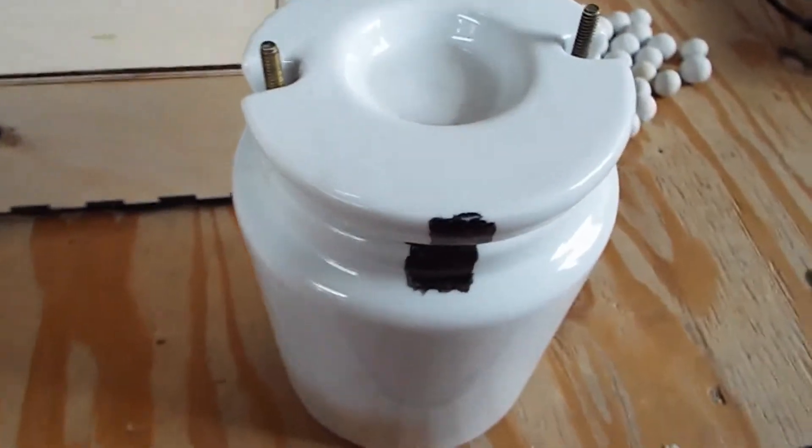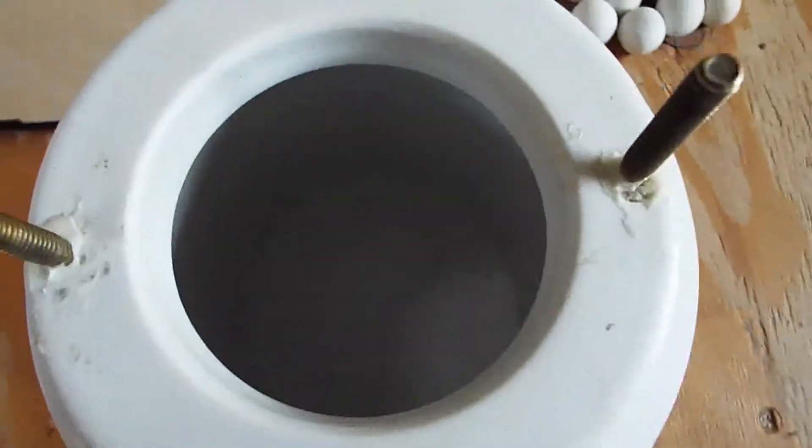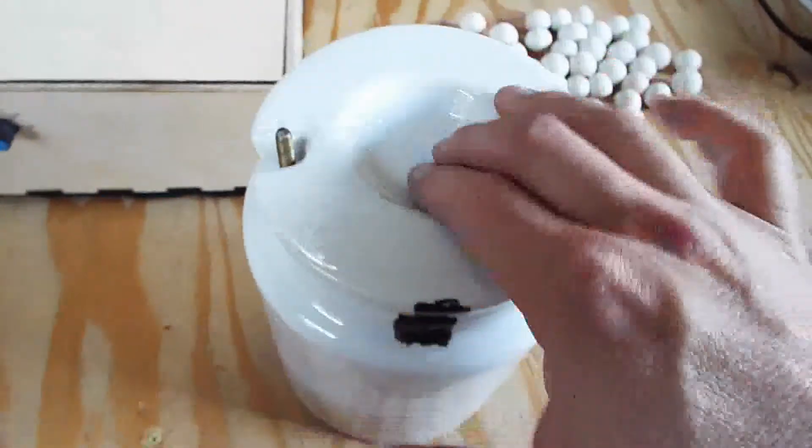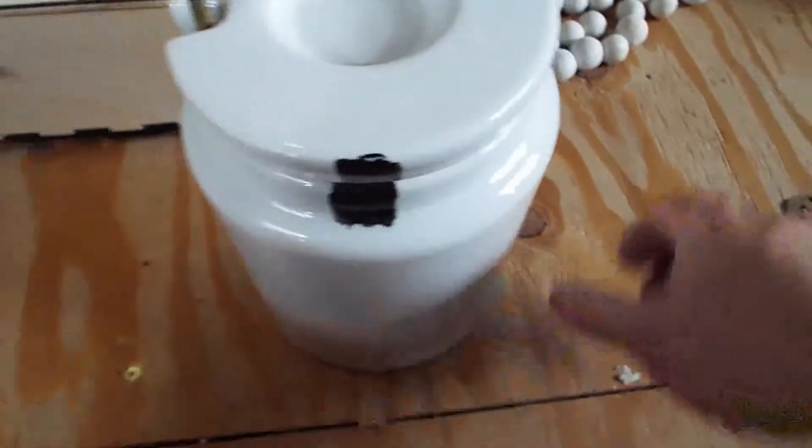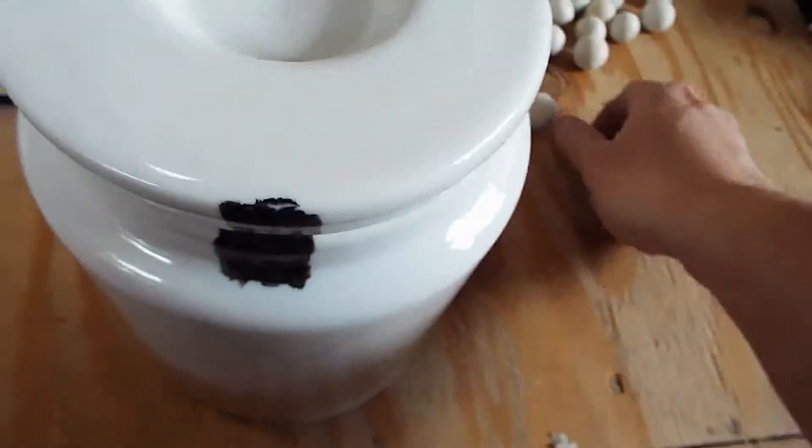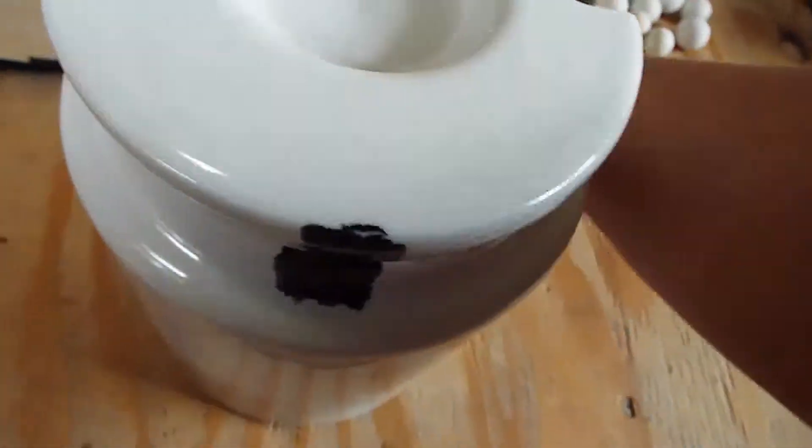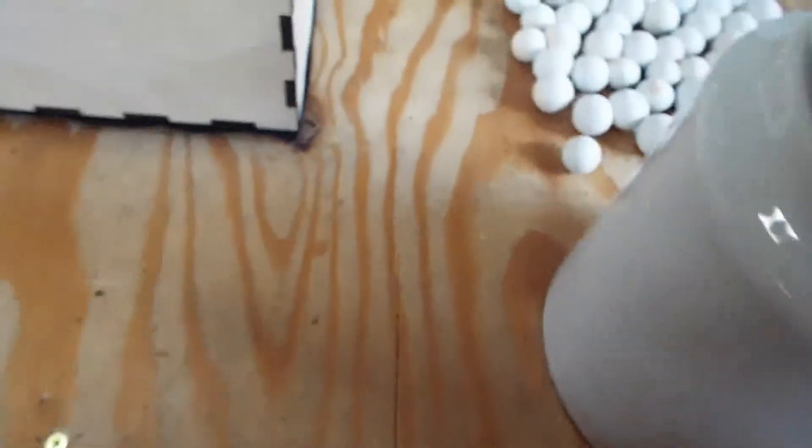So the first major thing with this ball mill is I'm using a ceramic jar here. The ceramic jar can be used with glass marbles or with porcelain or ceramic ball media. And this allows you to grind material without contaminating it with metal. If you're using steel balls, it would contaminate the grinded material with the steel particles.